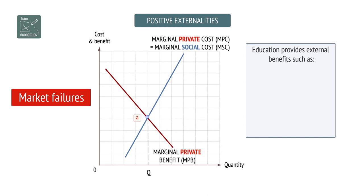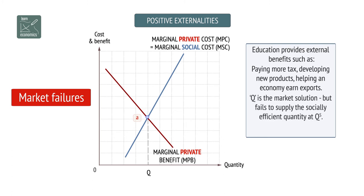Merit goods generate considerable external benefits. An external benefit from production is the benefit that you might gain when a business locates in your area, providing jobs and income which circulates around the local economy.